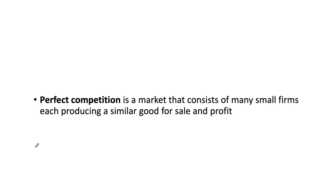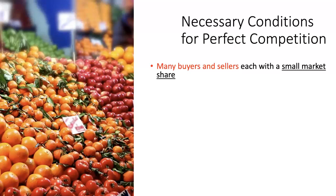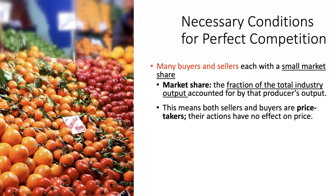What is a perfectly competitive market? A perfectly competitive market is a market that consists of many small firms, each producing a similar or homogenous product for sale and earning profits. Some necessary conditions for perfect competition are that there are many buyers and sellers, and each seller has a very small market share. Market share is essentially the fraction of the total industry output accounted for by the producer's output.